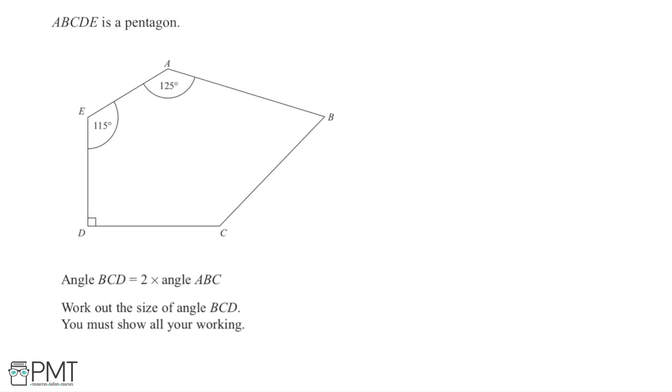So in this question I'm told that ABCDE is a pentagon. We then have the diagram of the pentagon here, it's an irregular pentagon. We're told that angle BCD is equal to two times the angle ABC and we're asked to work out the size of the angle BCD showing all of our working.